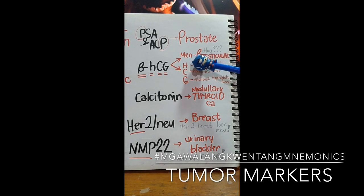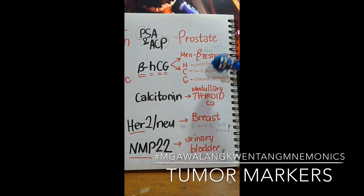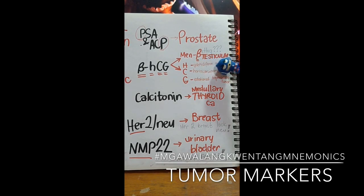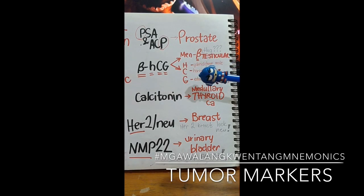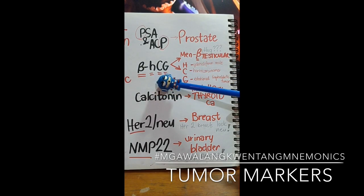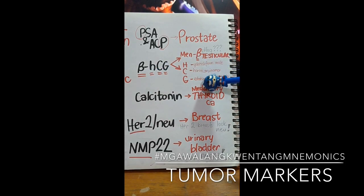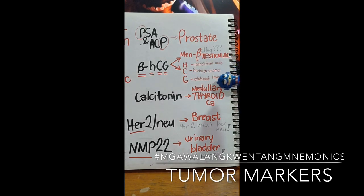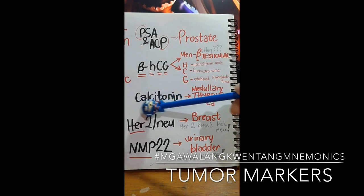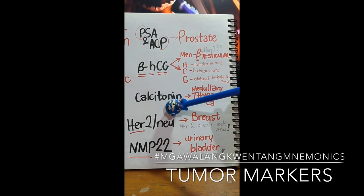To remember beta-HCG as a tumor marker for testicular cancer in men, we can think of the letter B as 'betlog' — no malice, it's just to help us remember. For female patients, when this substance is elevated, we use the three letters H-C-G to remember three conditions: H for hydatidiform mole, C for choriocarcinoma, and G for gestational trophoblastic tumor.